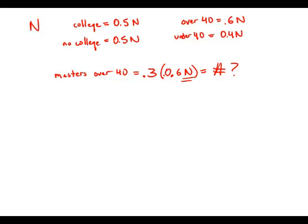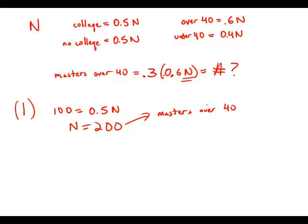So in order to figure out this number, we'd need to know the value of n. Statement number one tells us exactly 100 of the employees are college graduates. So the college graduates, which are 50% of all employees, equals 100. That immediately tells us that the total number of employees is 200. If we know the total number of employees, we can figure out the number with master's degrees over 40. And so this statement by itself is sufficient.